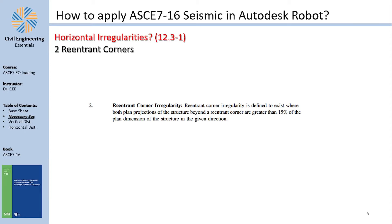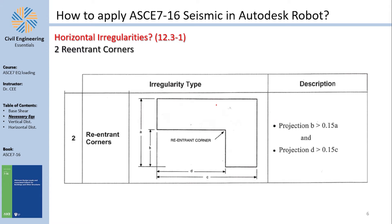The next irregularity is re-entrant corners (table 12.3.1-1). A re-entrant corner irregularity exists when the dimension of the re-entrant corner is more than 15% of the plan dimension of the building in that direction.